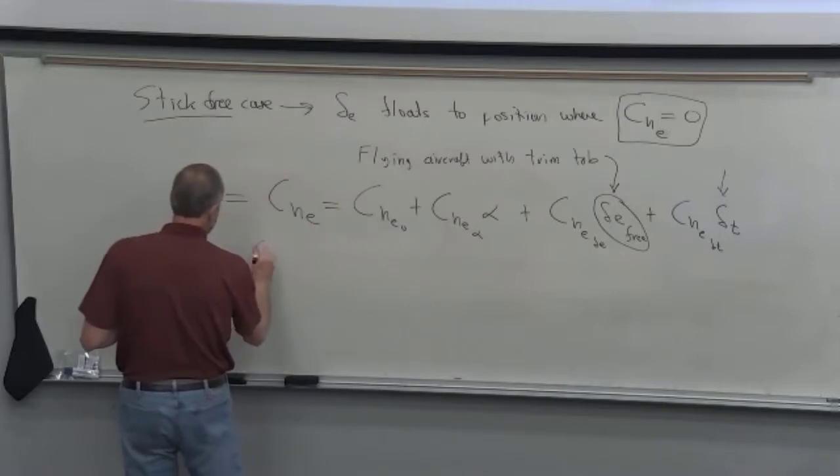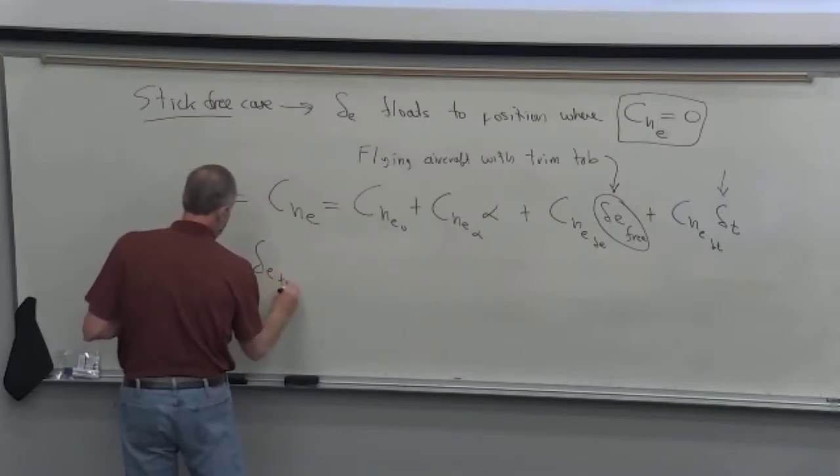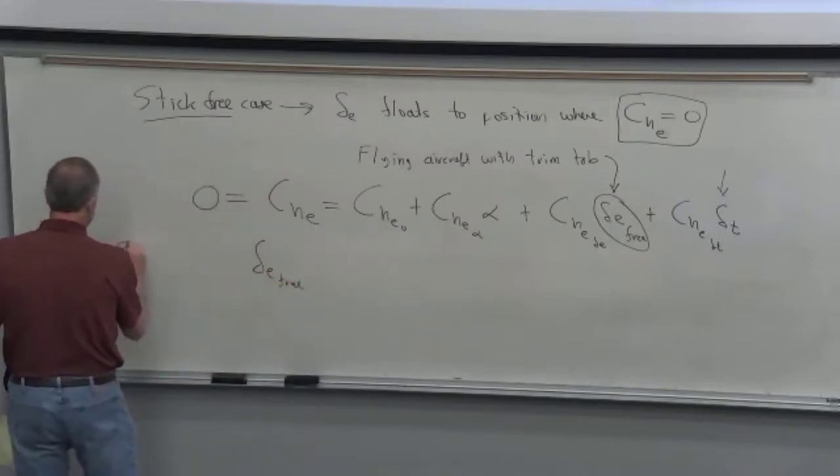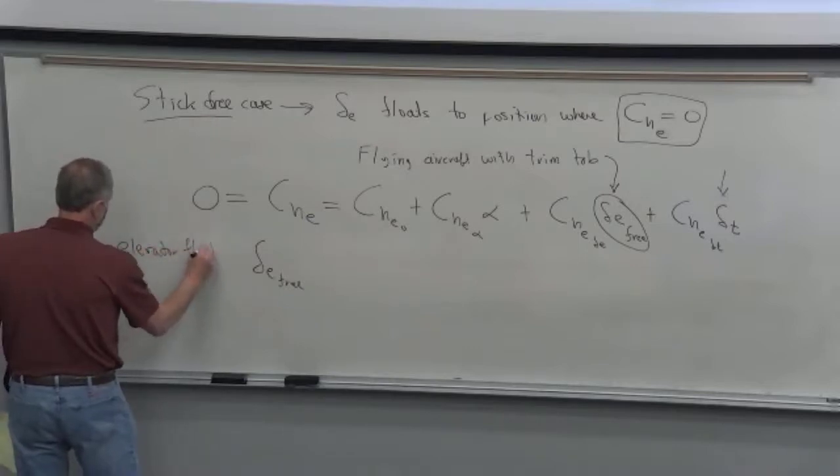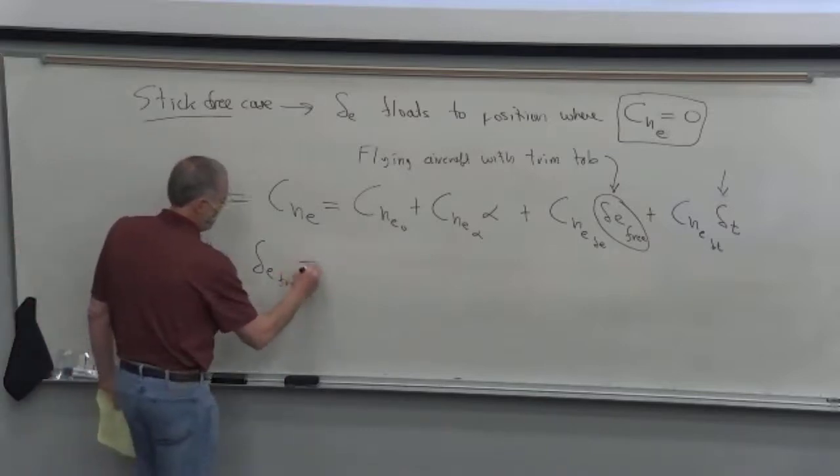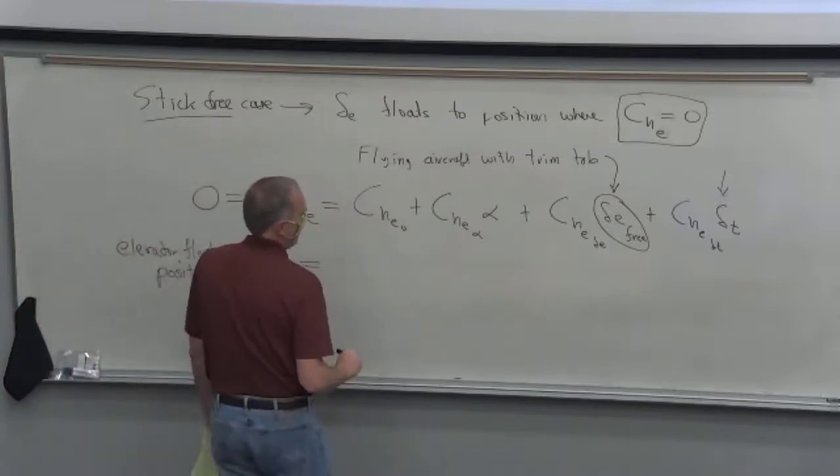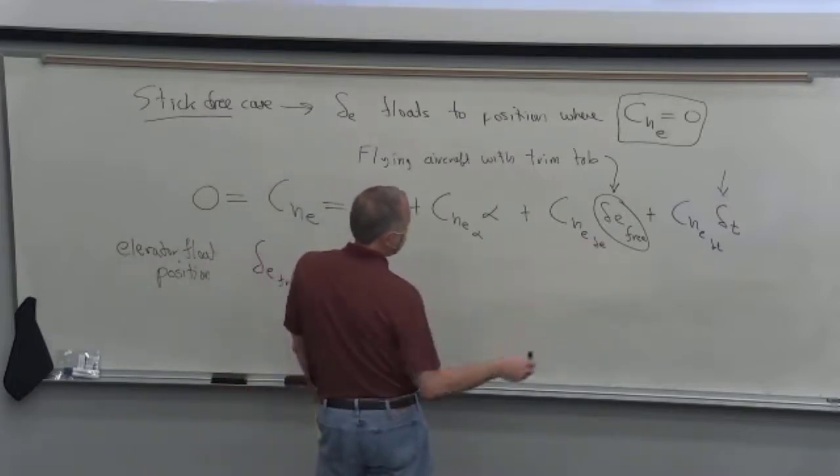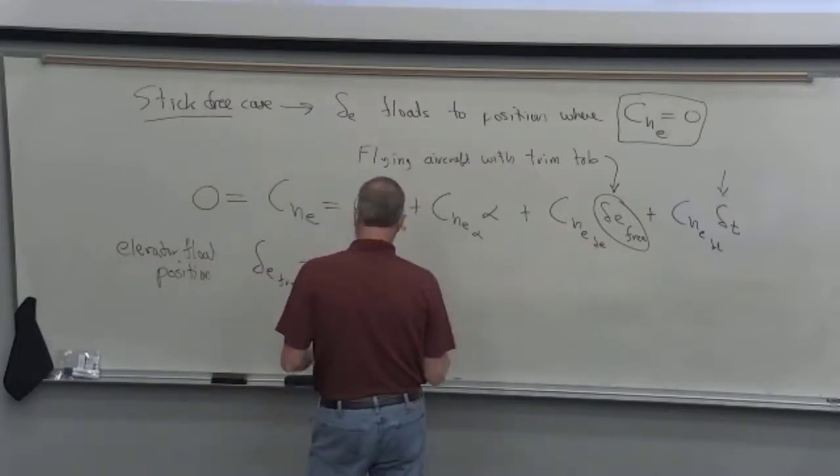So if we solve for that, it's easy. So this is the elevator float position. And we simply shove everything over the other side, put a minus sign on it, and divide by CHE delta E.